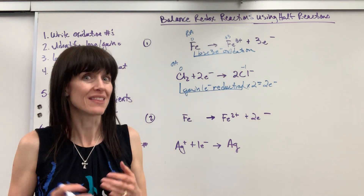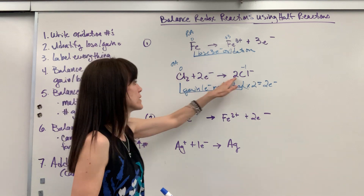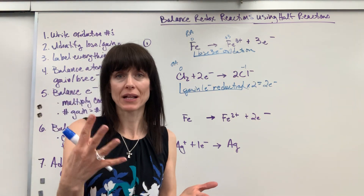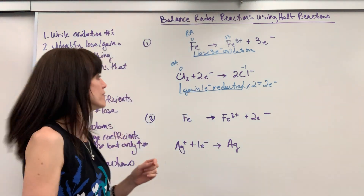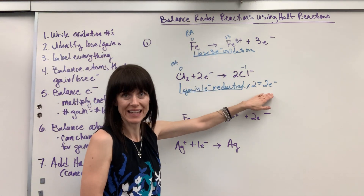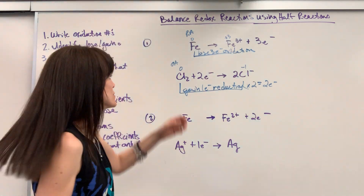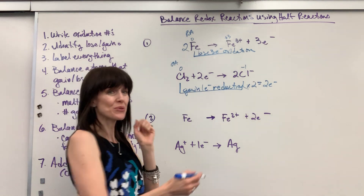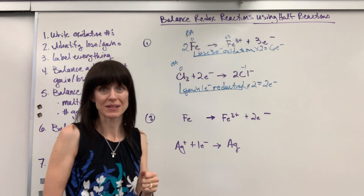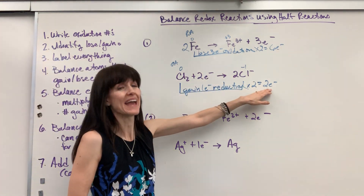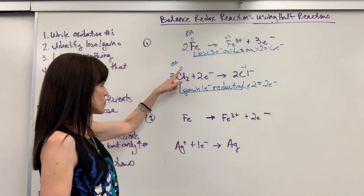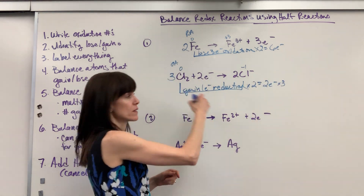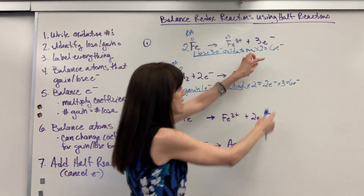Step three: check that the atoms being oxidized and reduced are balanced before doing anything else. One iron, one iron — good. Two chlorine, two chlorine — good. Now balance the electrons: the goal is to have the same number of electrons gained as lost. I have three lost and two gained. The smallest number both go into is six, so I multiply the iron half reaction by two — two iron atoms each losing three electrons gives six electrons lost. For chlorine, multiply by three — three Cl₂ molecules times two chlorines times one electron gives six electrons gained.